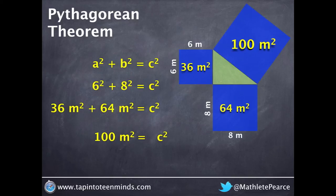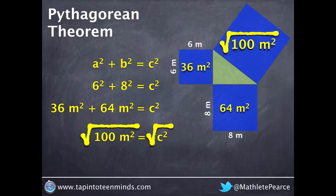And since we have a square with an area of 100m squared, it makes sense that we must square root in order to find the dimensions of this square, and more specifically, the length of the hypotenuse.